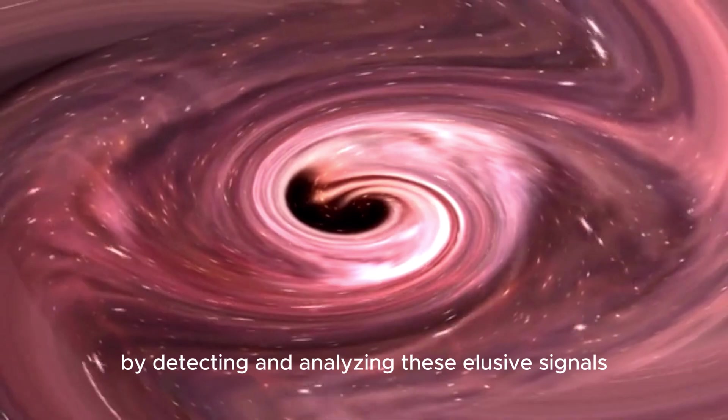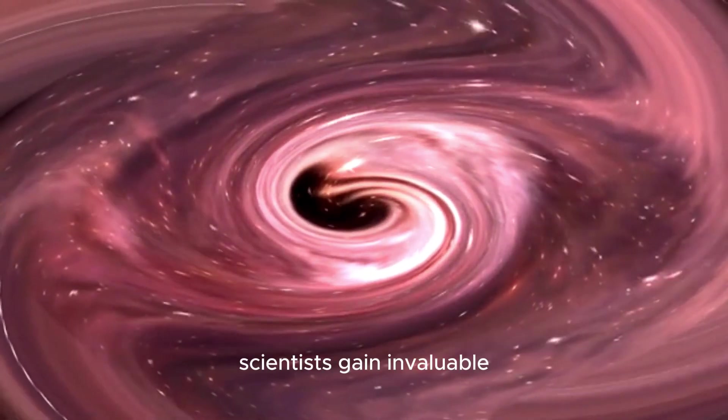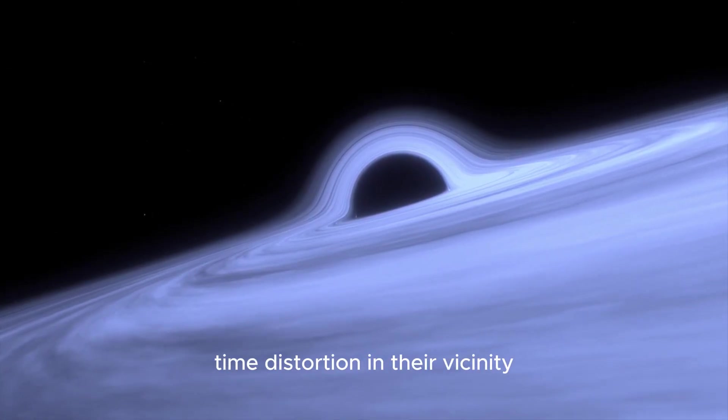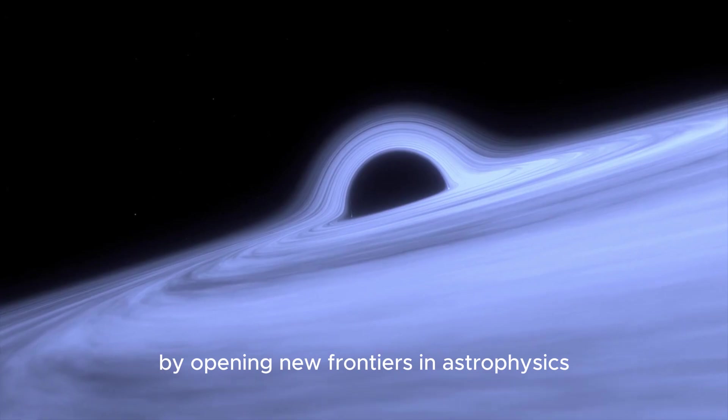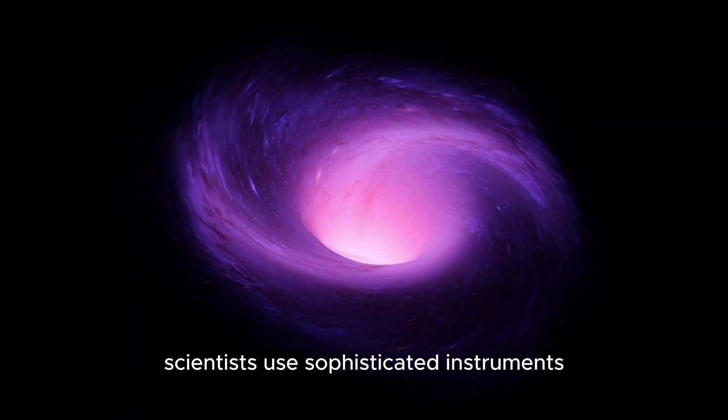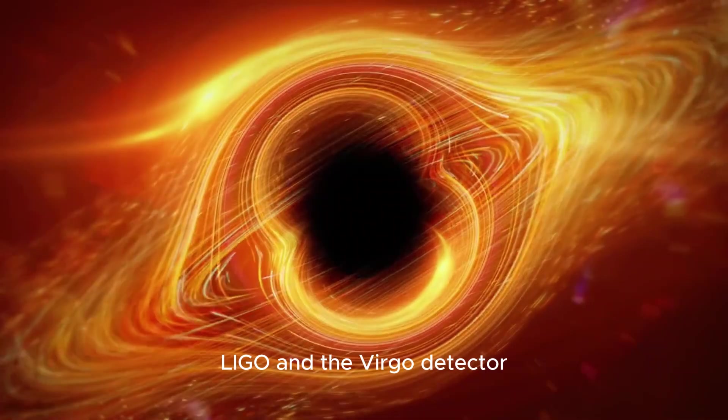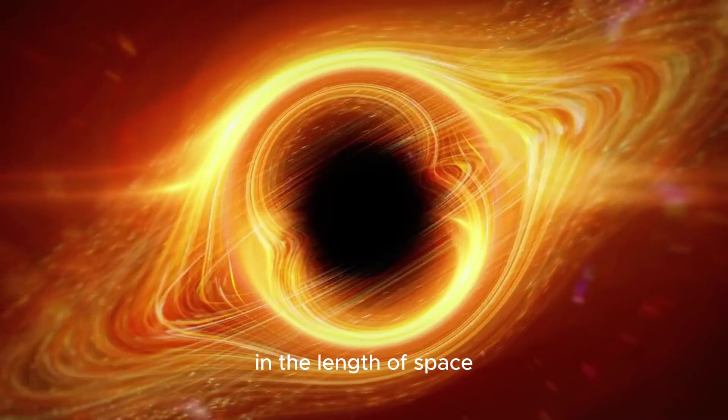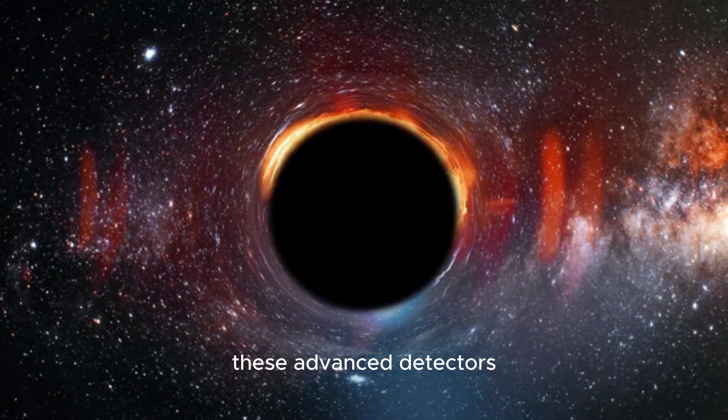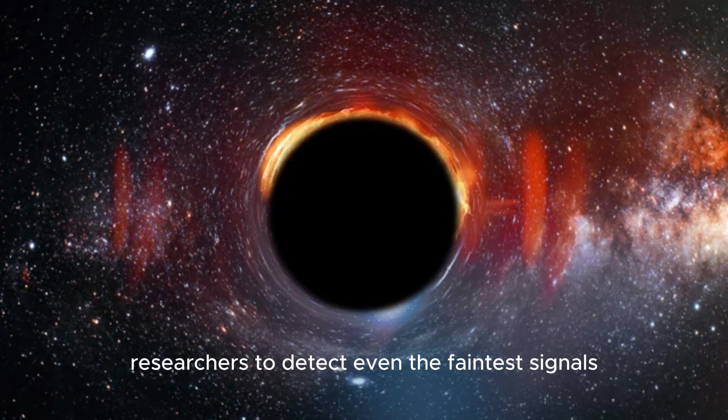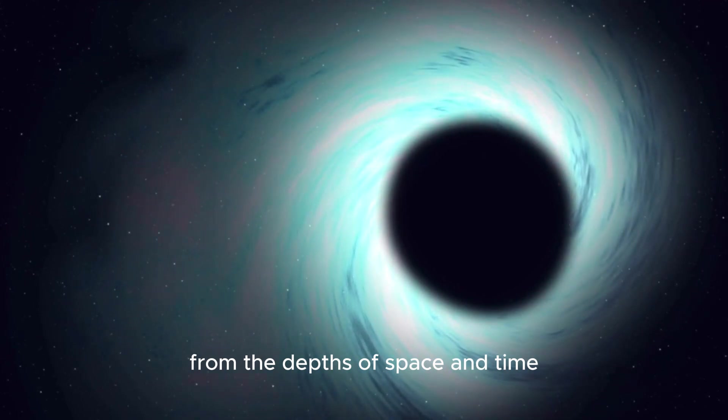By detecting and analyzing these elusive signals, scientists gain invaluable insights into the dynamics of black hole mergers and the nature of spacetime distortion in their vicinity. To detect gravitational waves, scientists use sophisticated instruments like the Laser Interferometer Gravitational Wave Observatory, LIGO, and the Virgo detector, which are capable of measuring minute changes in the length of space caused by passing gravitational waves. These advanced detectors operate with unprecedented sensitivity, allowing researchers to detect even the faintest signals from the depths of space and time.